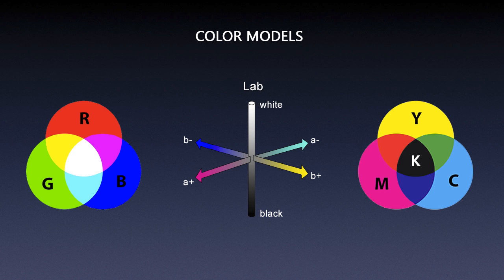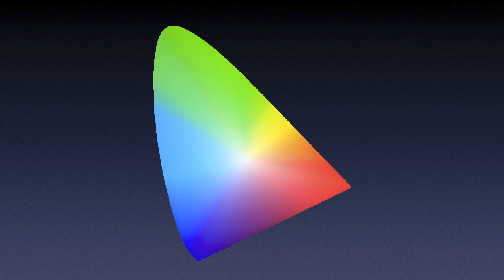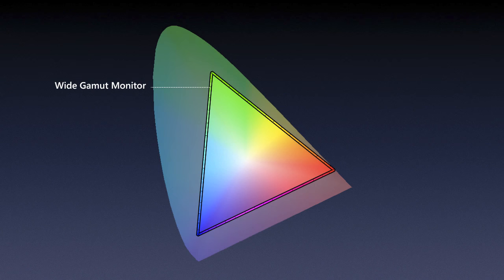These are just models — they tell us how to get a color but not how much of that color a certain device or application can actually produce. What you see here is called the spectrum locus, which represents human vision plotted in 2D. This triangle represents the reproducible colors on my monitor, which uses an RGB color model. Its color space — the range of reproducible colors — is represented by that triangle, and that range is known as the gamut.